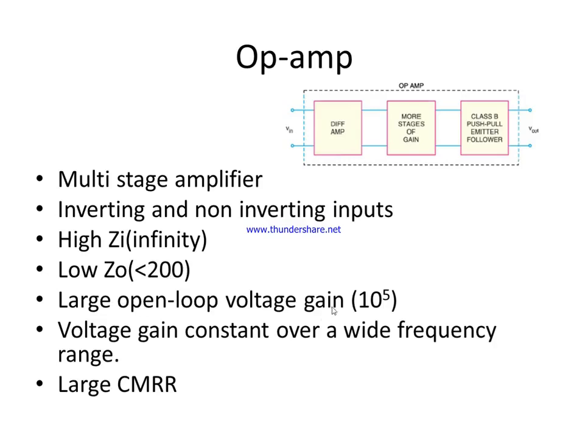Next is a very large open-loop voltage gain, approximately 10 to the power of 5. Open-loop voltage gain is the voltage gain without any kind of feedback — if we are not giving any feedback, the voltage gain the amplifier will give is known as the open-loop voltage gain, and it is very high for op-amps, around 10 raised to 5.